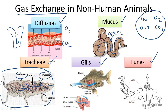Moving on, fish respire with the help of gills. Gills exchange oxygen for CO2 with the help of a counter current. A counter current is formed between the fish's blood and the water entering the body. When water moves out, it also carries CO2 with it.